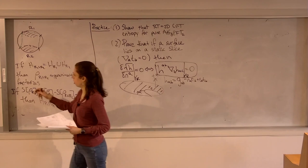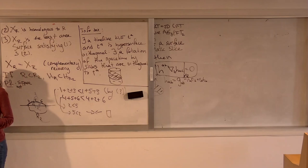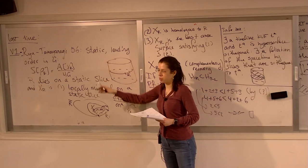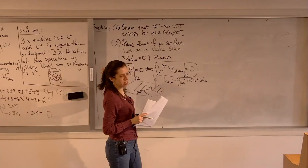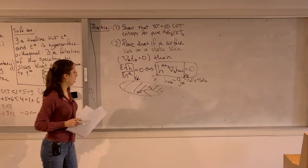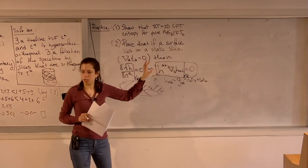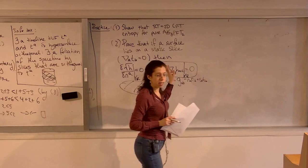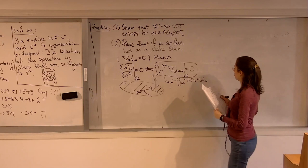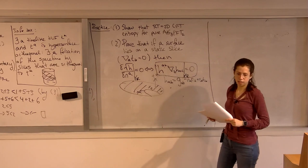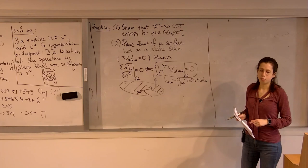Why do I bring up this very geometric statement? The answer is: if you just look at this condition, nowhere in the statement — if you forget where it came from — is there a reference to the static slice. This is a statement about properties of the surface X_R without referring to the slice it lies on. So if we're looking for a way to generalize Ryu-Takayanagi away from static spacetimes — because static spacetimes are extremely non-generic, they are a measure-zero set — then we might want to remove the static slice from the definition of the RT surface. This condition is another characterization that doesn't refer to the static slice.